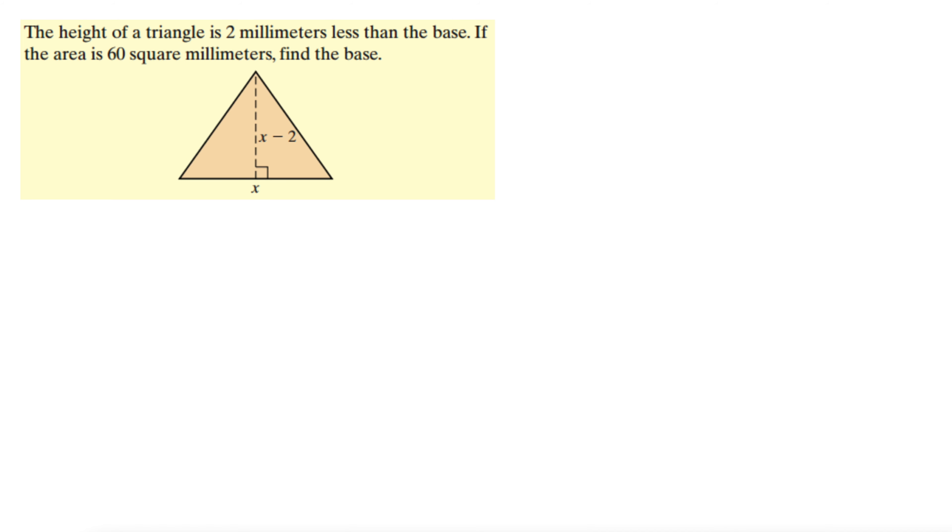The height of a triangle is two millimeters less than the base. If the total area is 60 square millimeters, find the base. Okay, so they give us the area and we have a triangle here.